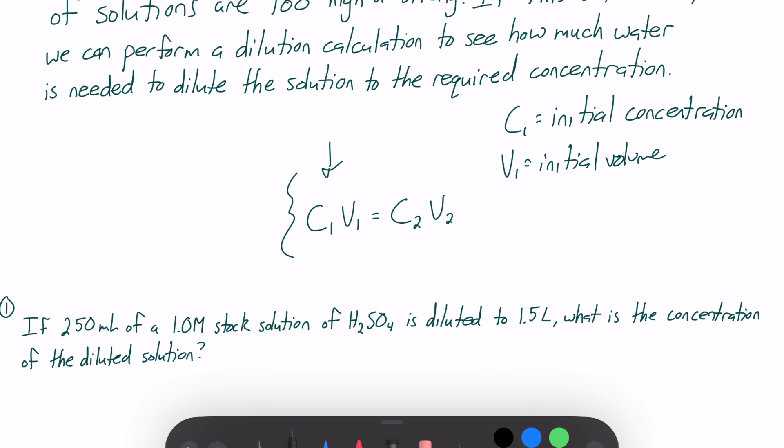If you know what C1 and V1 are, you can probably guess what C2 and V2 are as well. C2 is our final or diluted concentration, and V2 is our final or diluted volume.